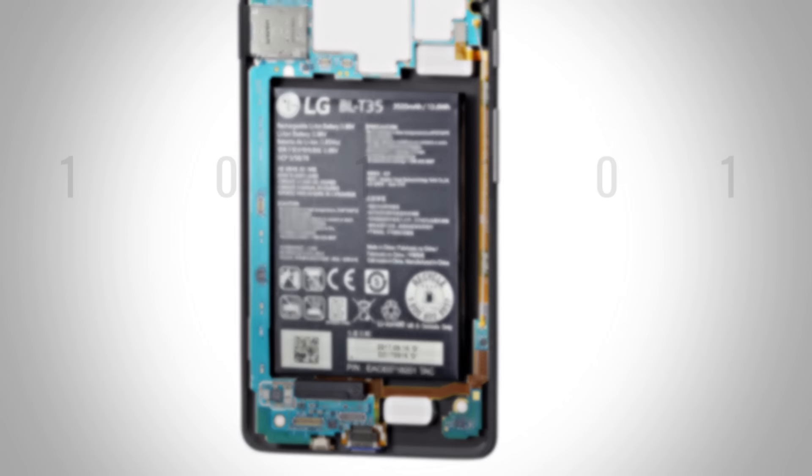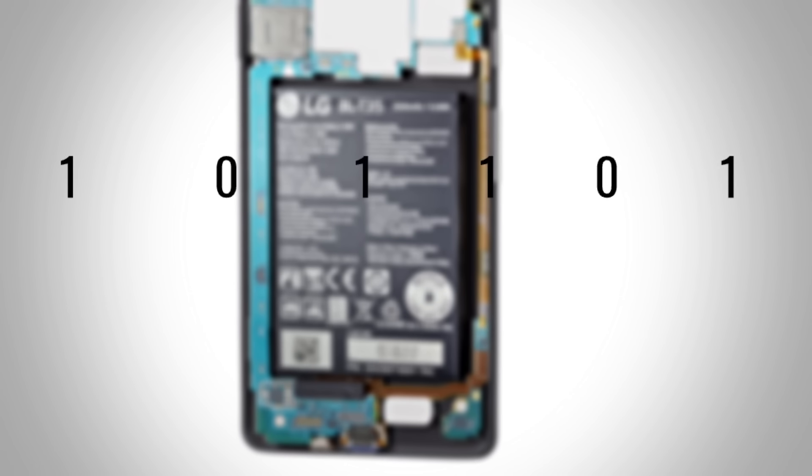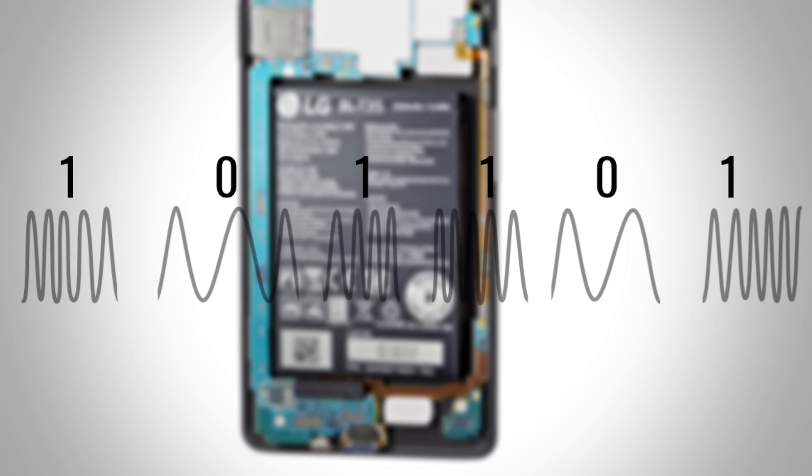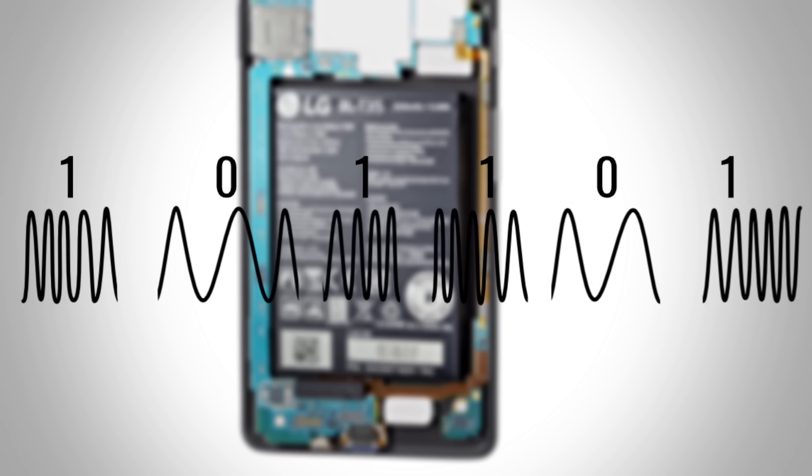For example, in the case of frequency, zero and one are transmitted by using low and high frequencies, respectively.